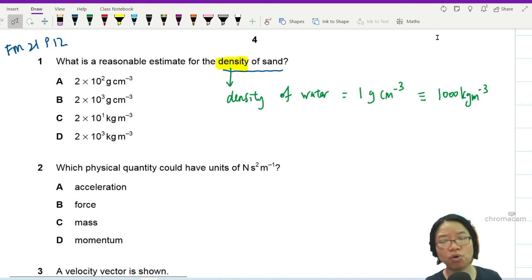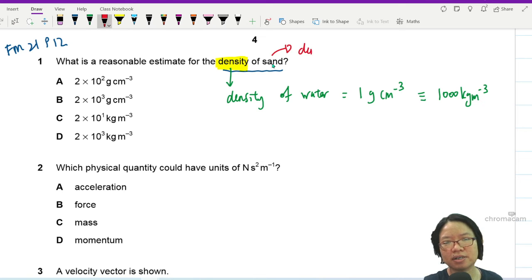Just like density of oil is around 800 kg per meter cube. So let's think a bit. If you notice, sand tends to sink, right? So sand is denser than water.